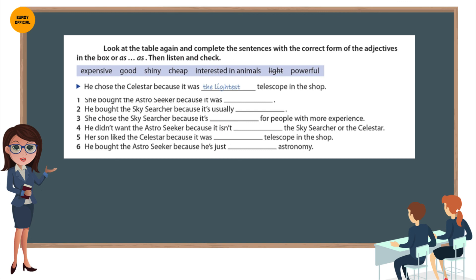I wasn't interested in the AstroSeeker because it isn't as powerful as the SkySearcher or the Celestar. I bought an AstroSeeker. My son liked the Celestar because the other telescopes weren't as shiny as that one. He's only five. I bought the AstroSeeker because I'm just as interested in looking at animals as I am at looking at the moon.